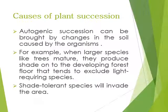Now, what are the reasons behind plant succession? The first cause is autogenic succession, which can be brought about by changes in the soil caused by the organisms themselves. These changes include accumulation of organic matter in litter or humic layer, alteration of soil nutrients, and change in pH of the soil. The structure of the plants themselves can also alter the community — for example, when larger species like trees mature, they produce shade onto the developing forest floor, tending to exclude light-requiring species, while shade-tolerant species invade the area.